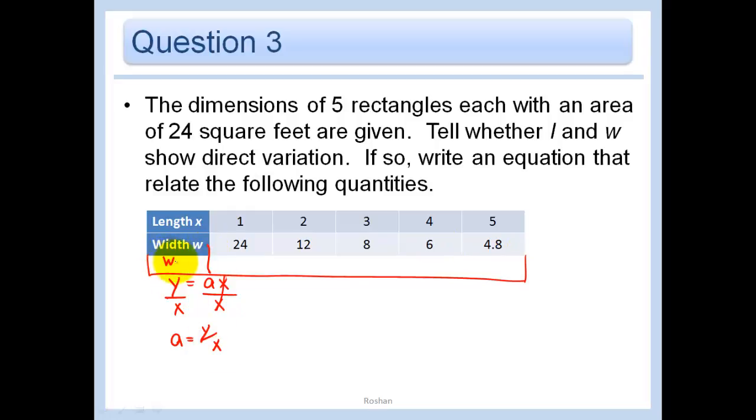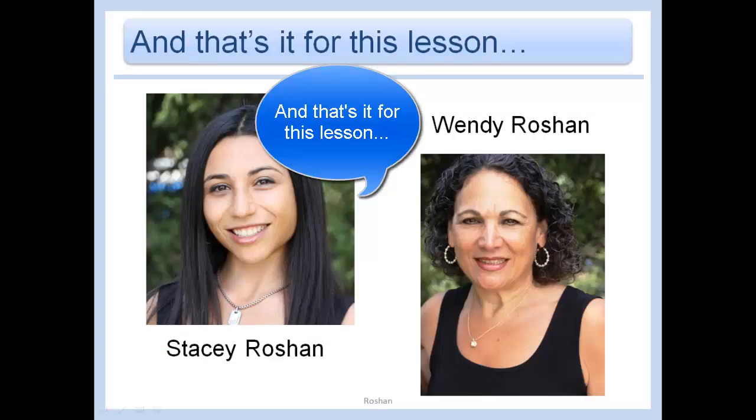So that would be 24 here. That would be 12 divided by 2 is 6. Do I even have to go any further? You do not. I don't because already I know that this is not always the same. This is equal to my A. It should be the same all the way across. And it's not. So my answer is no. And that's it for this lesson. Bye.